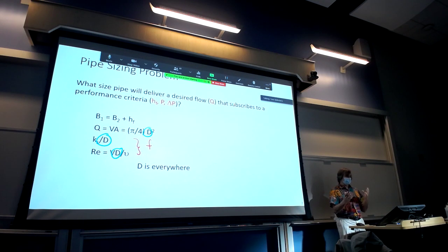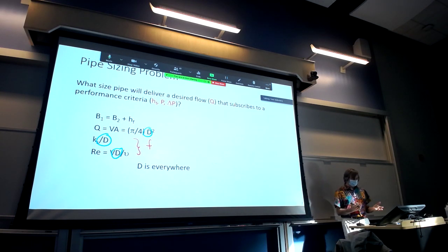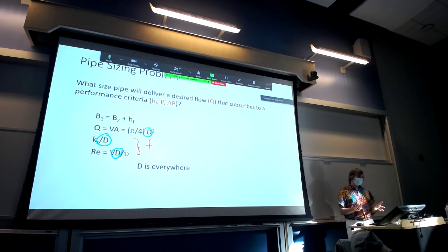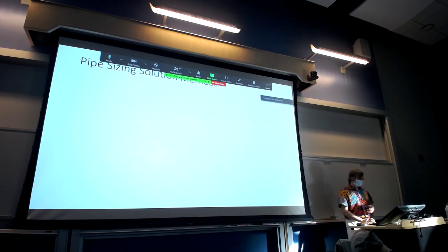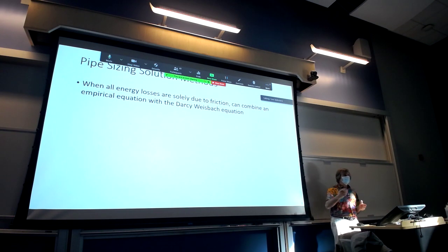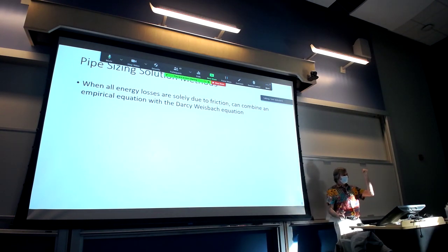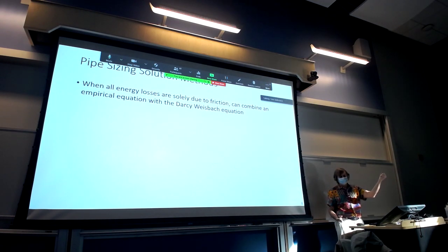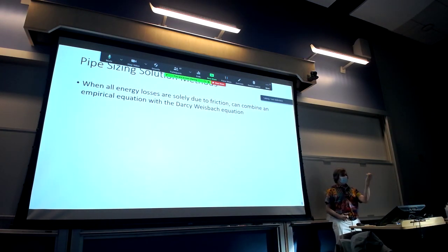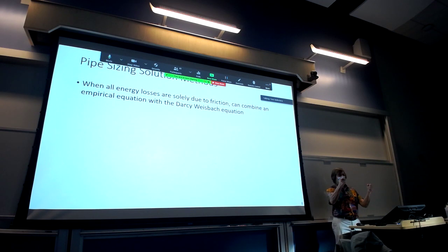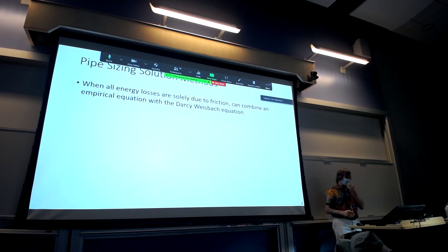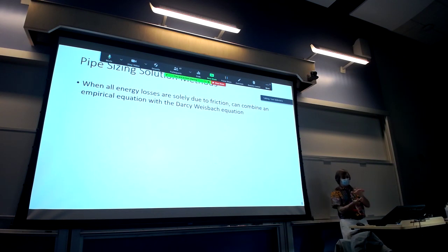The diameter problem is more challenging since diameter appears everywhere. For combining equations, just as we did with the discharge problem — combining Darcy-Weisbach with Colebrook, and Darcy-Weisbach with Swami and Jain — those were the first two equations on the handout from last time. You should also have that handout today, because both the discharge problem and the pipe sizing problem were on it.